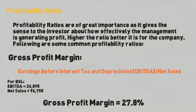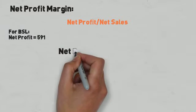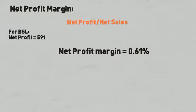For Bhushan Steel, gross profit margin is 27.8%. Net profit margin is calculated by dividing net profit by net sales. For Bhushan Steel, net profit margin is 0.61%.